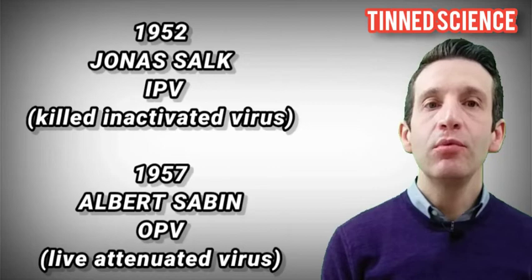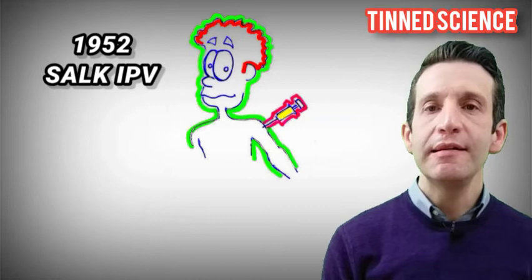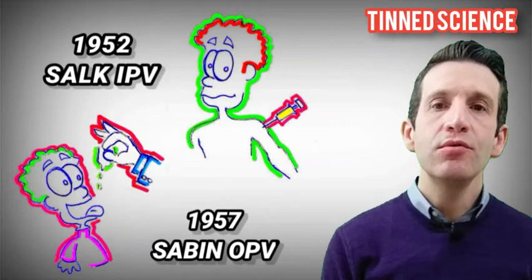In 1952, Jonas Salk developed the first vaccine against polio. It was based on killed, inactivated viruses, injected by syringe. While in 1957, Albert Sabin proposed a different method, using alive, attenuated viruses, administered orally.